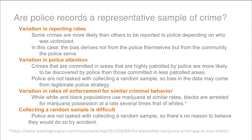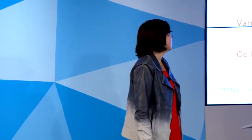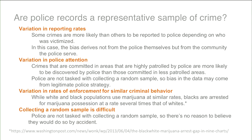Another source of bias is variation in police attention. Simply put, you're more likely to find something where you're looking. If police pay more attention to one community than another, crimes in the more-patrolled area are more likely to appear in the data. There's also variation in rates of enforcement for similar criminal behavior. One notable example: while white and black populations use marijuana at similar rates, blacks are arrested for marijuana possession at a rate several times that of white people, meaning blacks are overrepresented in that data.